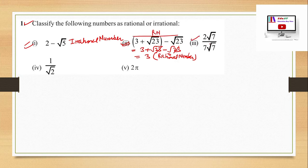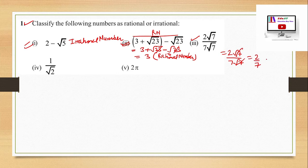Third part: simplifying, it is equal to 2√7 upon 7√7, which gives 2/7. This is a rational number — it is in P/Q form where Q is not equal to 0. So this number will be a rational number.